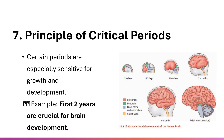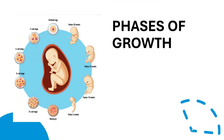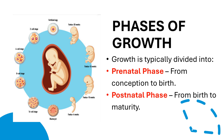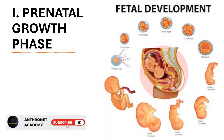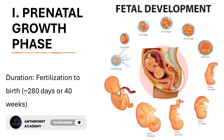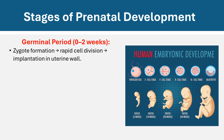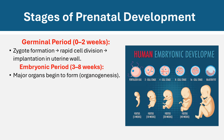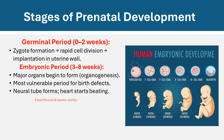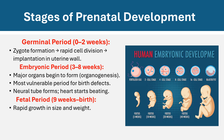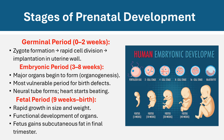Phases of growth: growth is typically divided into prenatal phase (conception to birth) and postnatal phase (birth to maturity). Prenatal growth phase — duration: fertilization to birth, 280 days or 40 weeks. Stages: Germinal period (0–2 weeks) — zygote formation, rapid cell division, implantation in uterine wall. Embryonic period (3–8 weeks) — major organs begin to form (organogenesis); most vulnerable period for birth defects; neural tube forms, heart starts beating. Fetal period (9 weeks to birth) — rapid growth in size and weight, functional development of organs.